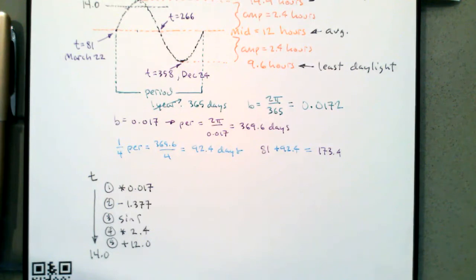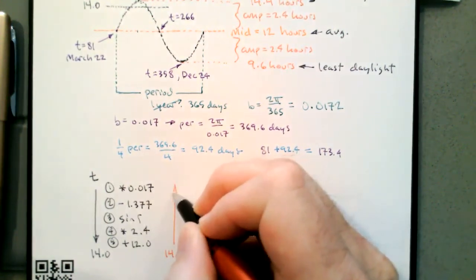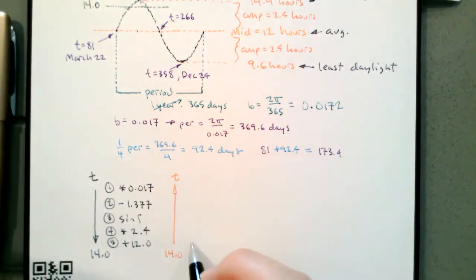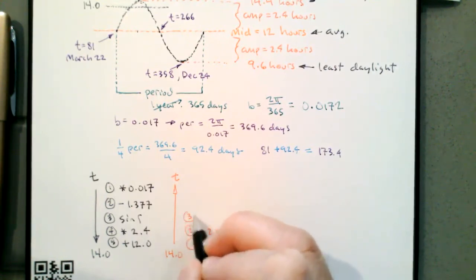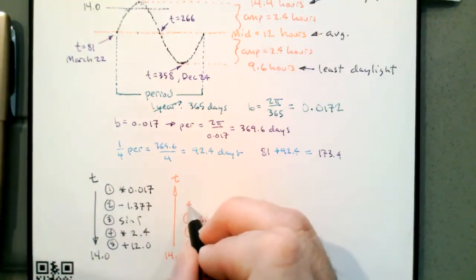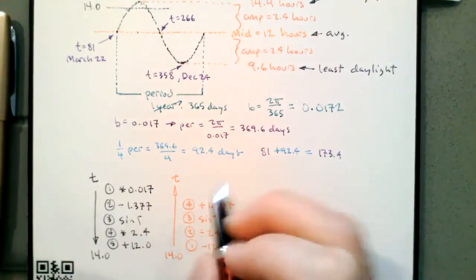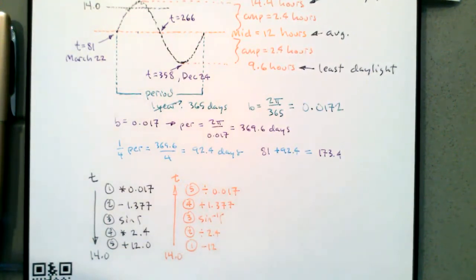To turn 14 back into T: first subtract 12, second divide by 2.4, third do the sine inverse — remember that involves three steps: reference angle, quadrants, and all solutions (though all solutions is optional here since the problem only asks about one year). Fourth add 1.377, fifth divide by 0.017. This is inverse operations in reverse order — this is all just what we're thinking through as we plan our solution.